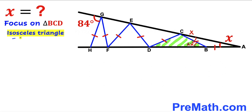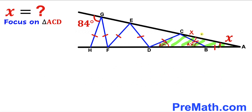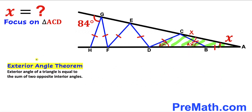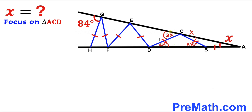Now let's focus on triangle BCD. We can see this is an isosceles triangle since this side length equals this side length, so therefore this angle must be congruent to this angle. If this angle is 2X, then this angle has got to be 2X as well. Next, let's focus on triangle ACD and recall the exterior angle theorem. This exterior angle equals the sum of the two opposite interior angles: 2X plus X makes 3X, so this angle turns out to be 3X.